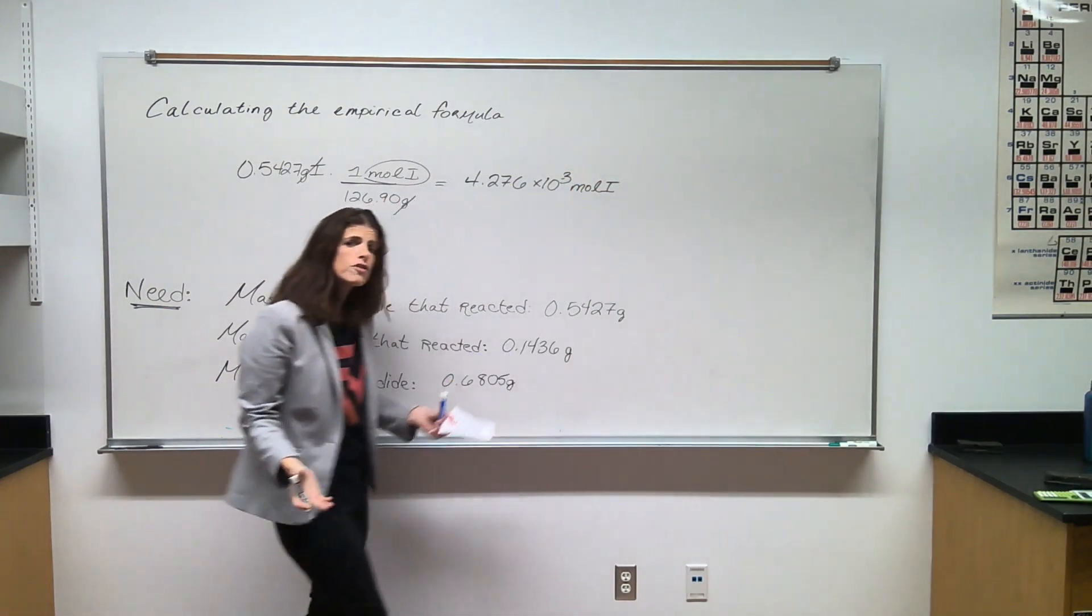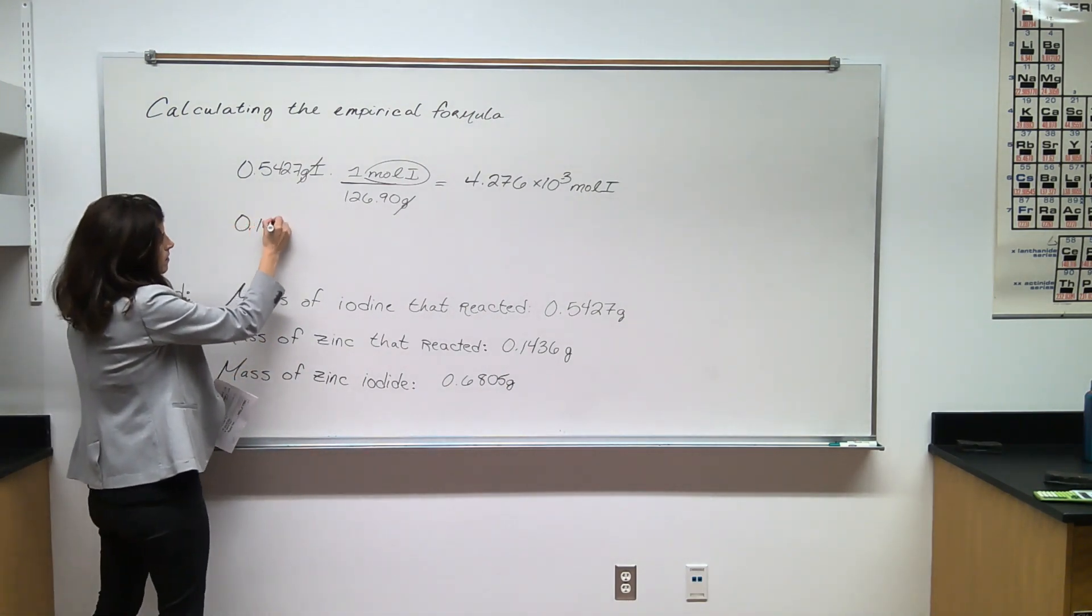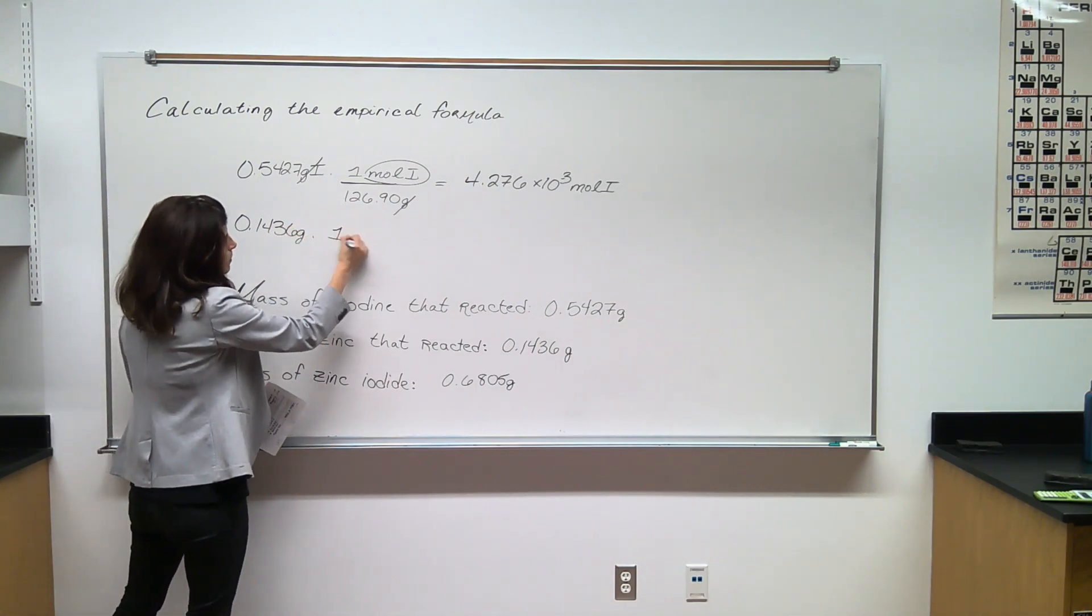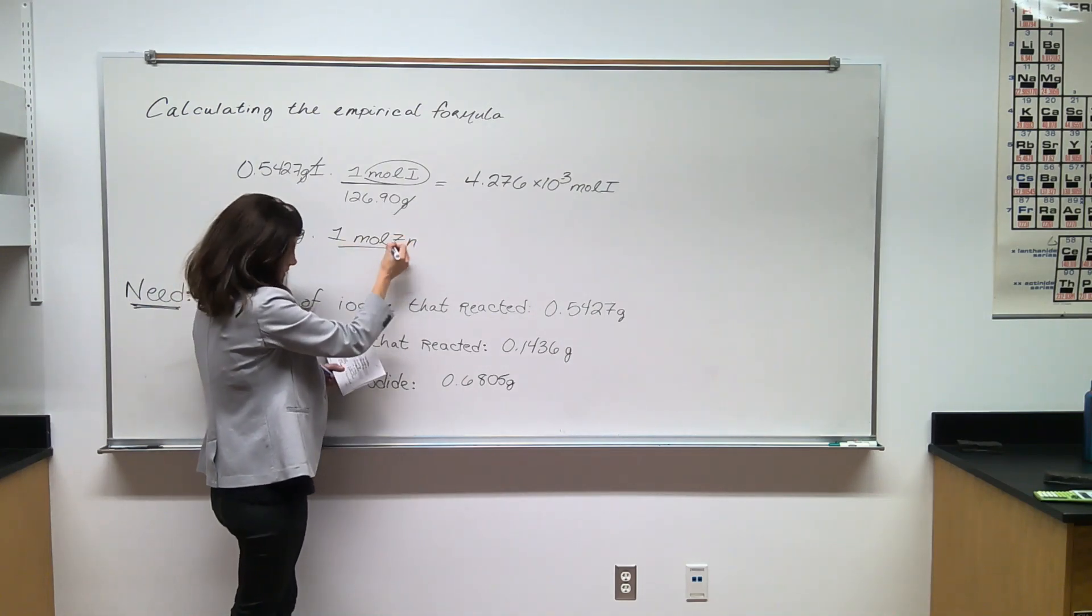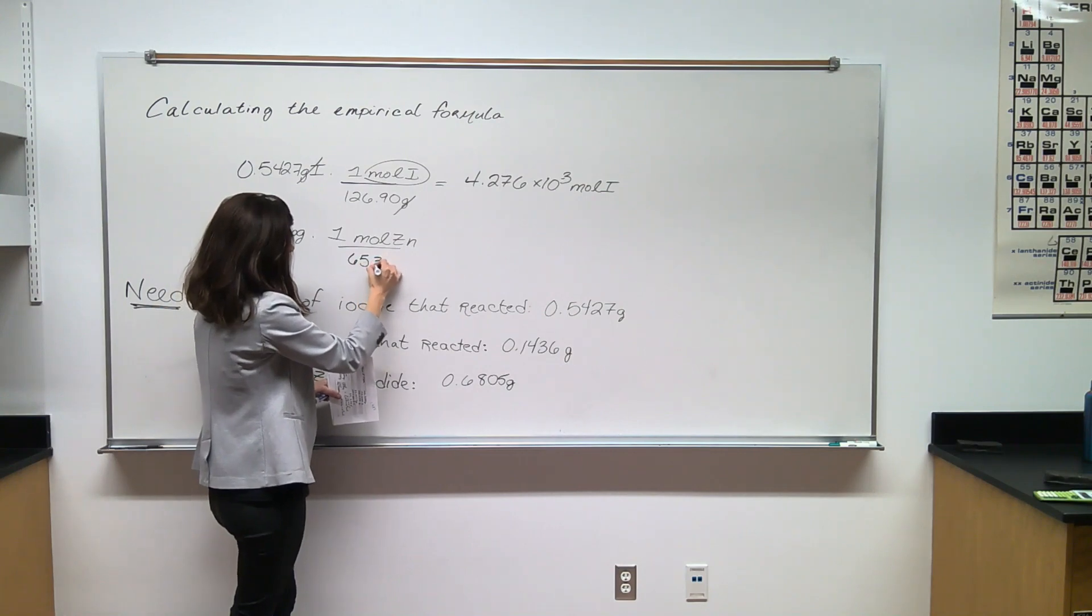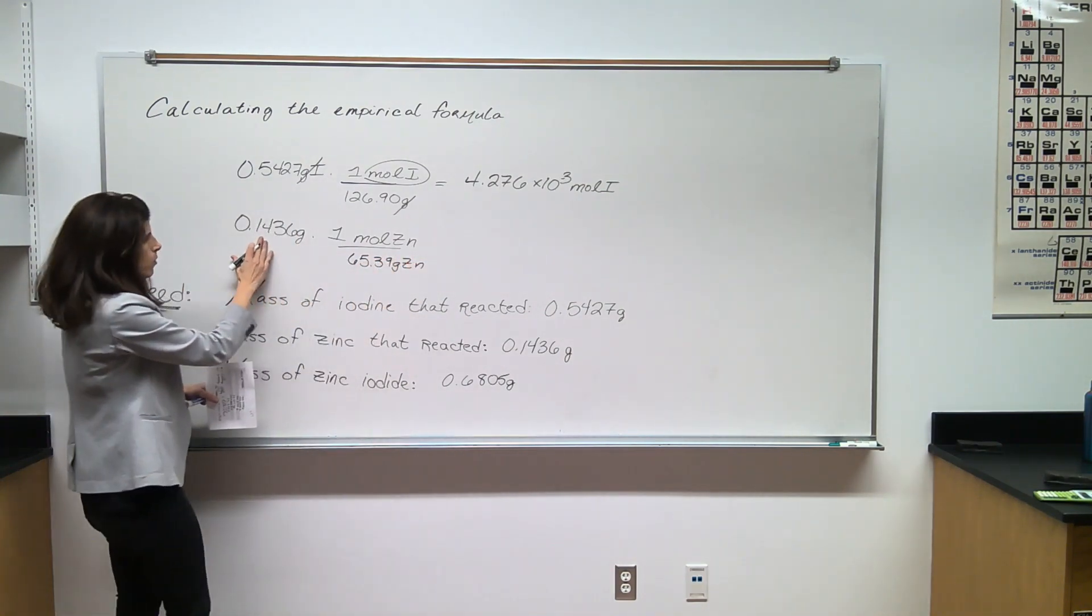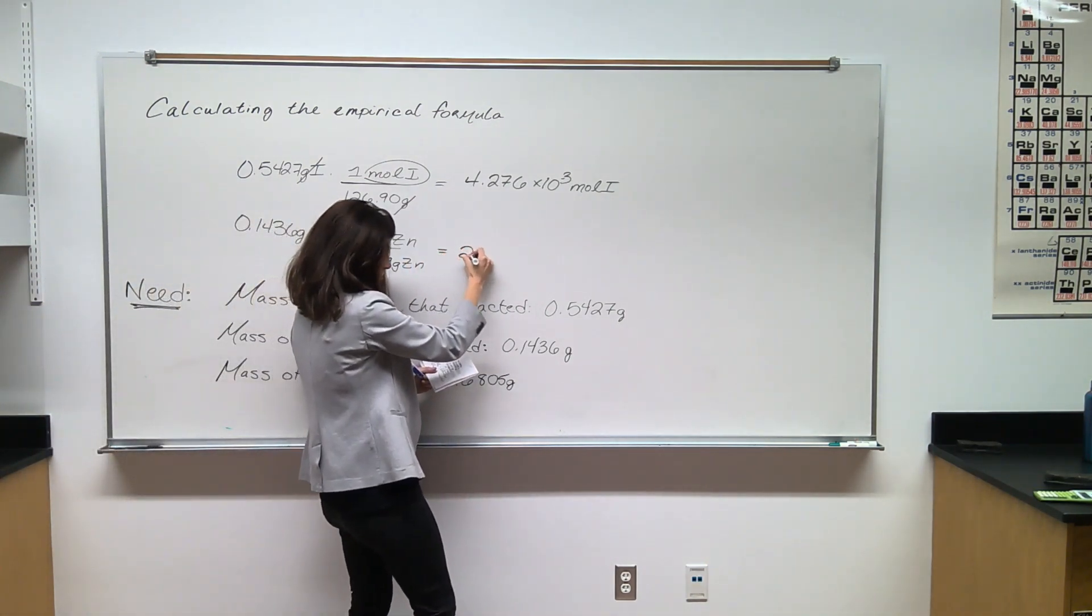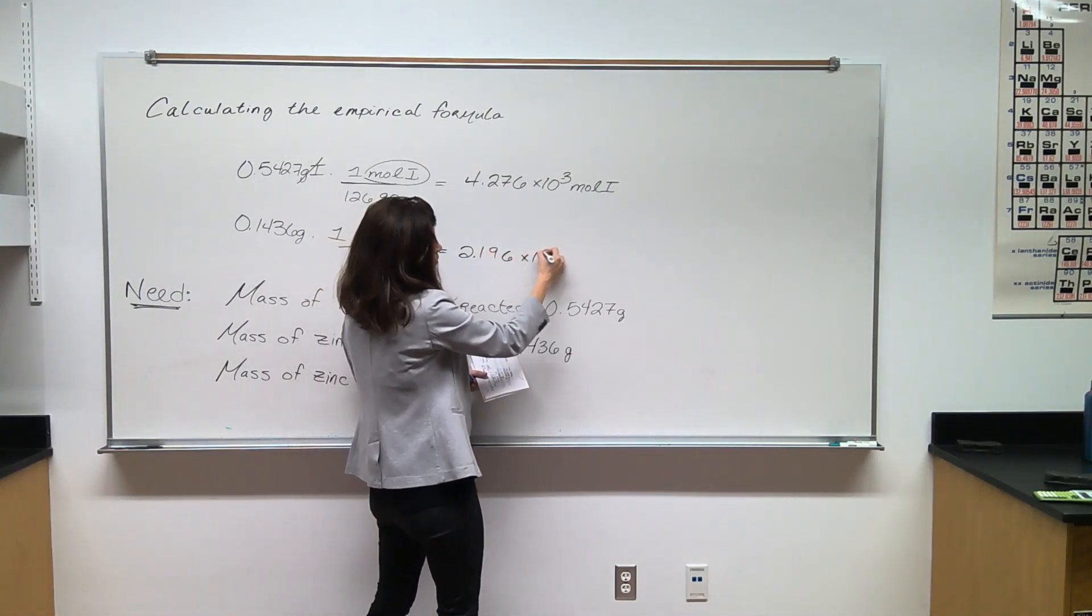The calculation for zinc is very similar. I'm going to start with the mass of zinc that reacted. I'm going to use my periodic table and look up the atomic mass of zinc. 0.1436 divided by 65.39 gives us 2.196 times 10 to the negative third moles of zinc.